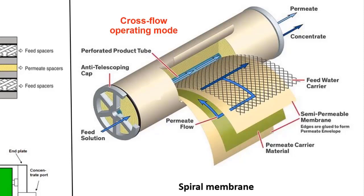In this operating mode, a portion of the feed passes through the membrane and goes to the permeate channel, then is discharged to the permeate tube. The retentate also crosses the membrane and is discharged to the outlet.